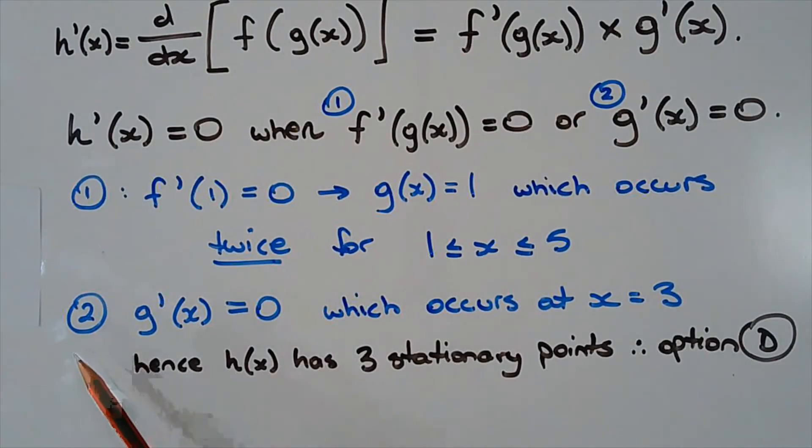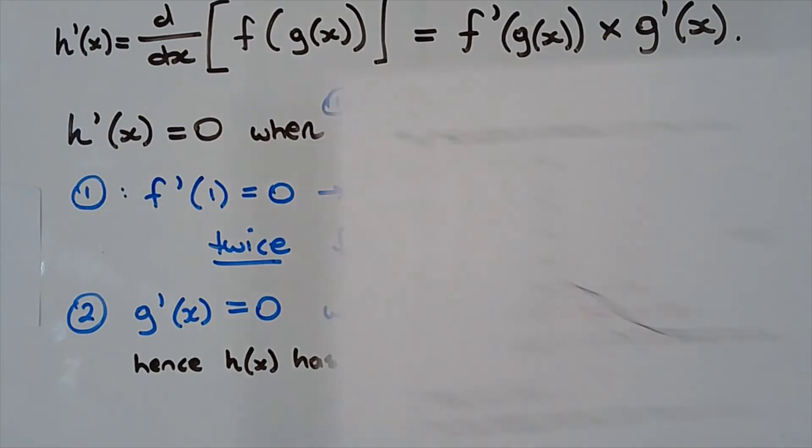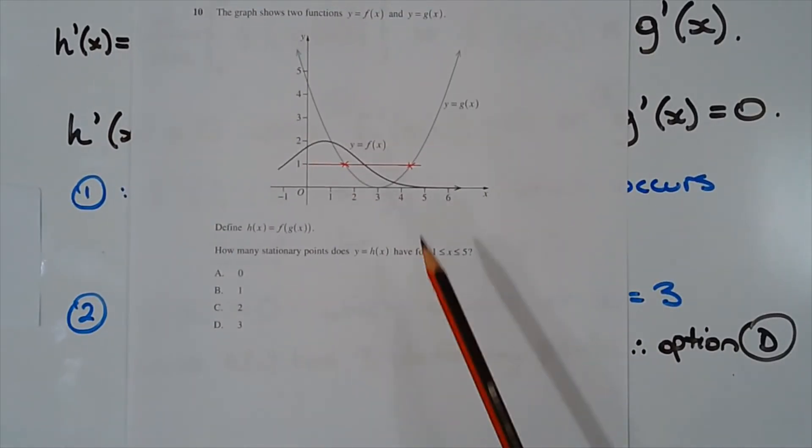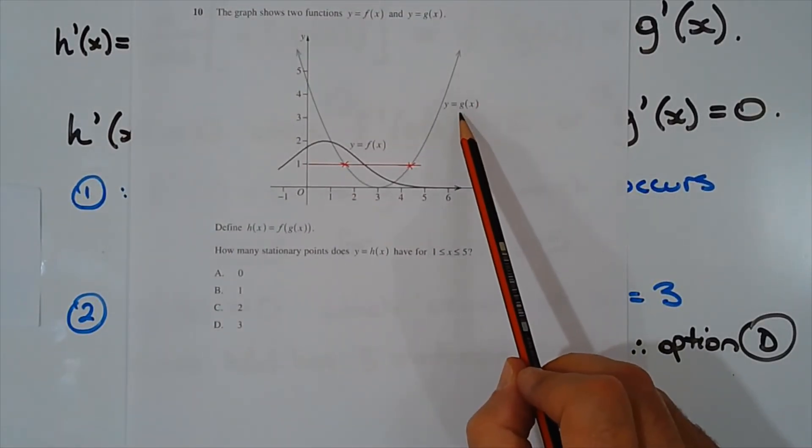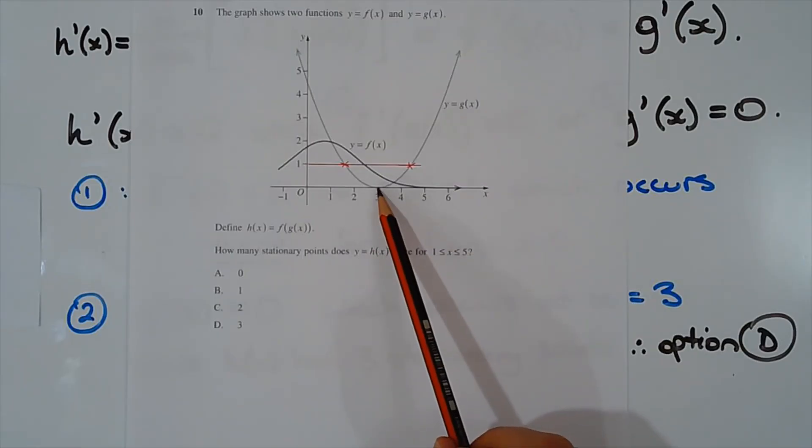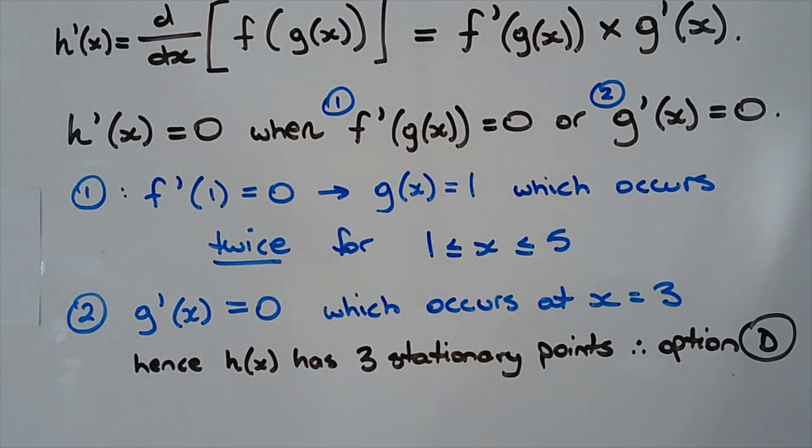Now let's look at case number 2, g dash of x equals 0. That occurs at x equals 3. So if we go back to the graph, y equals g of x. g dash of x equals 0 at this point at the vertex of the parabola. So that's where the third stationary point occurs.